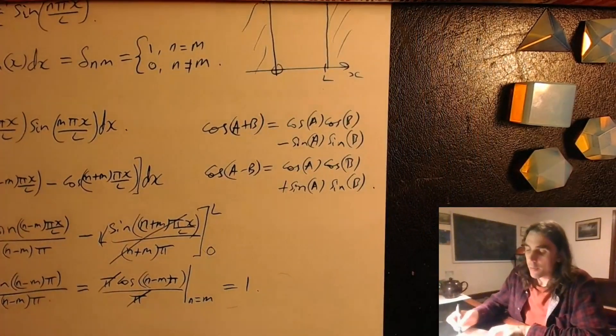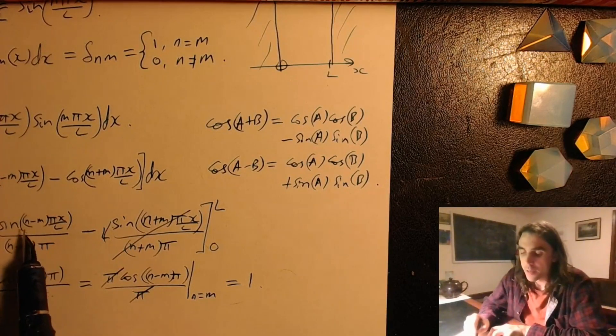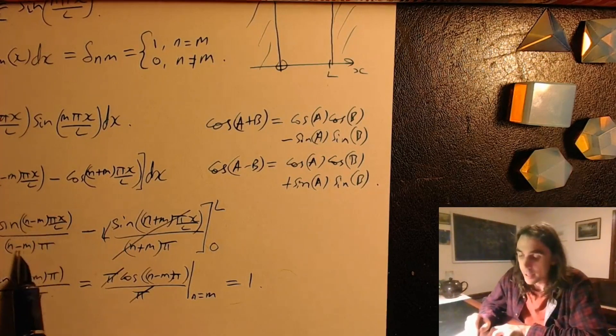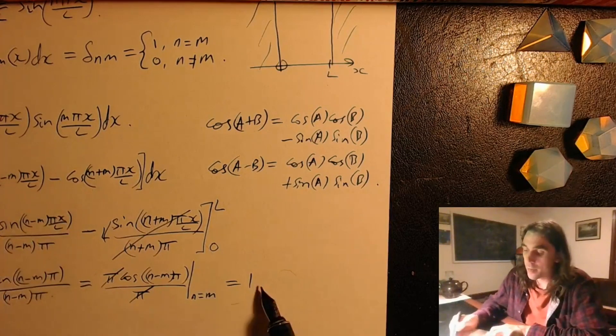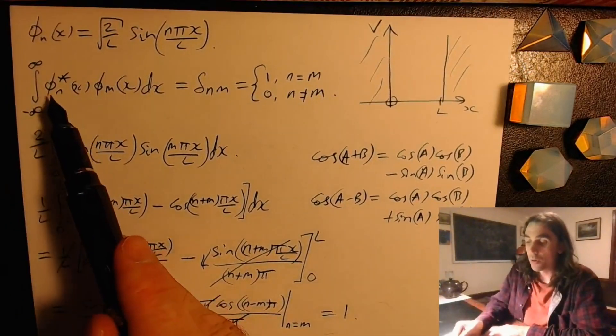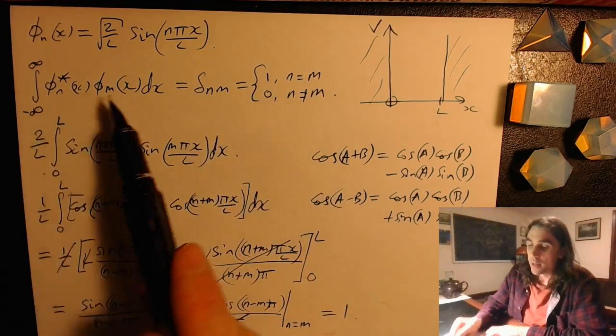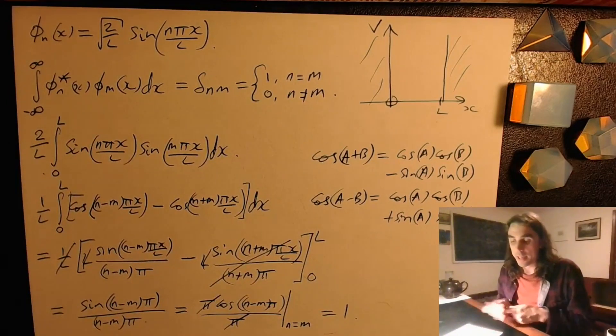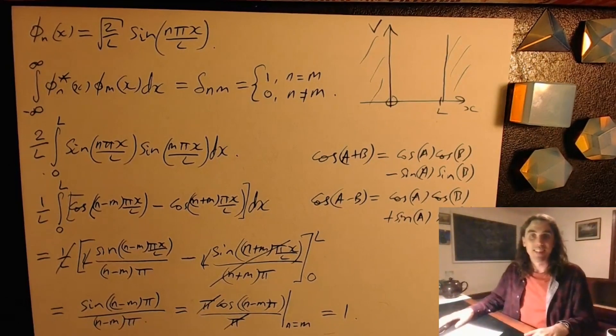And so we found that if we'd have put anything other than n equals m into here, it would have disappeared because if n and m are different integers, this is non-zero, this is zero, the whole thing is zero. If n equals m, it evaluates to one. And that's precisely what we wanted to show. We've shown the orthogonality of these eigenstates, and in fact we've shown that they're orthonormal because we've already normalized the eigenstates. So the normalized eigenstates within the infinite well are orthonormal. Okay, thanks for your time.